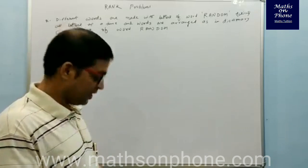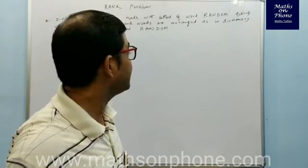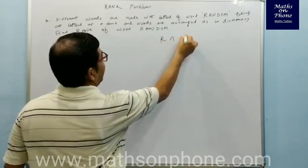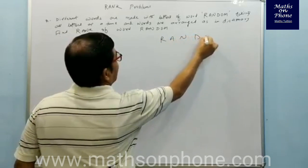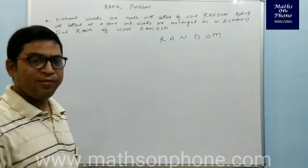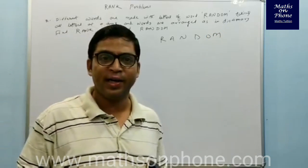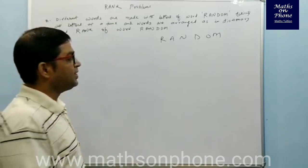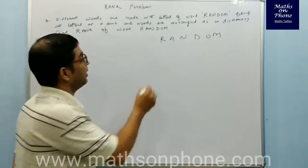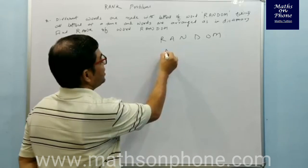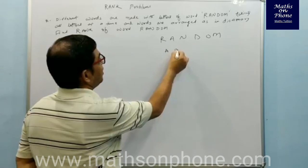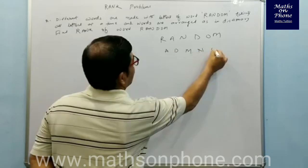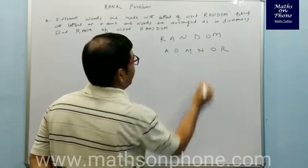The word RANDOM consists of the letters R, A, N, D, O, M. I'm giving you a technique — follow it and finding the rank becomes very easy. First, arrange these letters alphabetically: A, D, M, N, O, R.